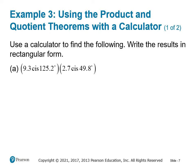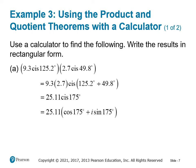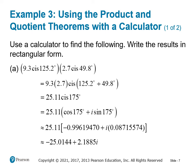So here we have a product. We're actually going to do one of each. We're going to do a product and a quotient using the calculator. So it's 9.3 cis 125.2° times 2.7 cis 49.8°. Again, here we're going to multiply the magnitudes and add the angles. As we go through this process, we get 25.11 times cis 175°. So we need to figure out what 25.11 times the cosine of 175° is, and also that same 25.11 times the sine of 175°. And we ultimately get −25.0144 + 2.1885i.